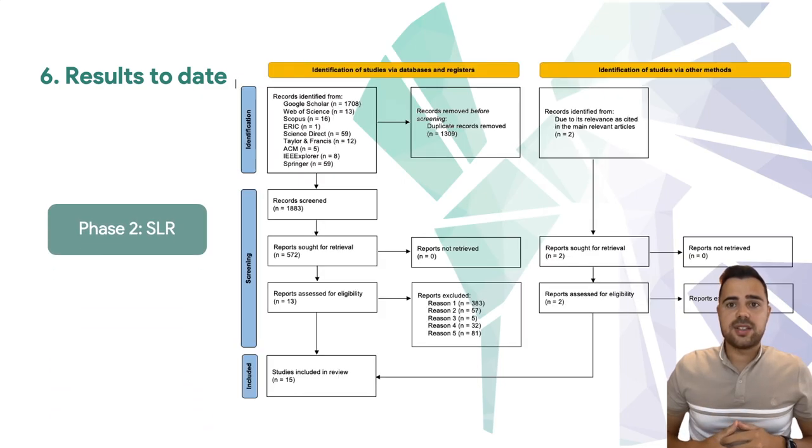In the second phase, concerning the systematic literature review, a total of nine databases and ten different search strings were used to obtain a total of 572 results. After applying the established inclusion criteria and quality criteria, a total of 15 studies have addressed e-assessment with different acceptance models.